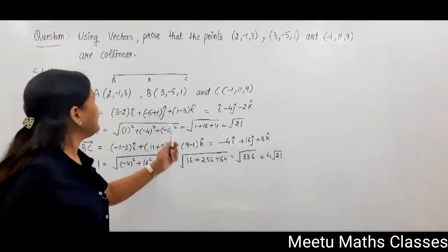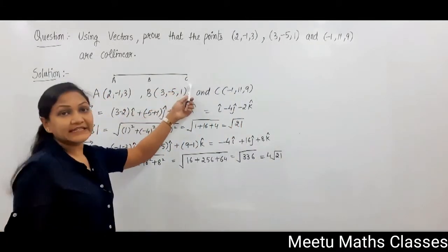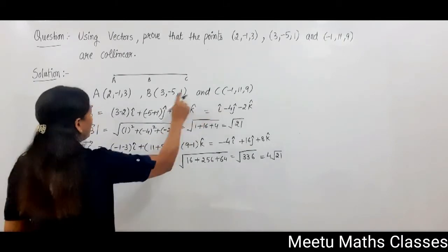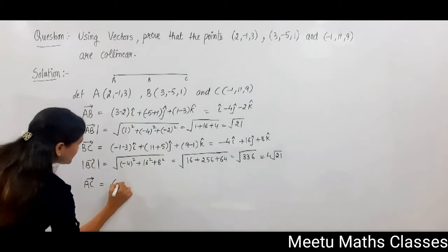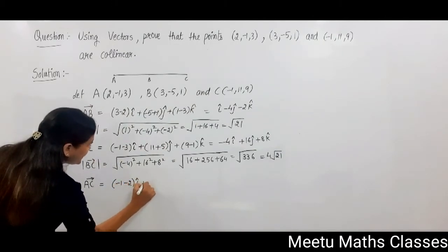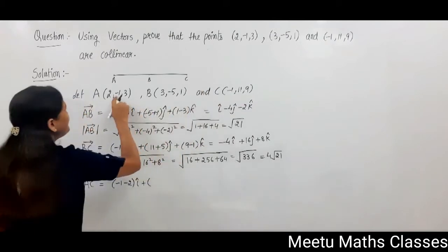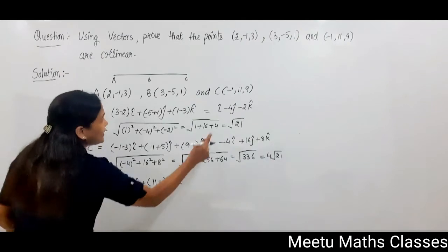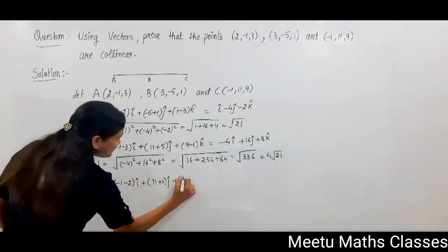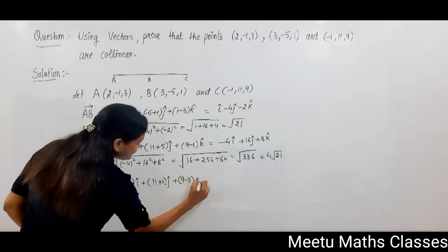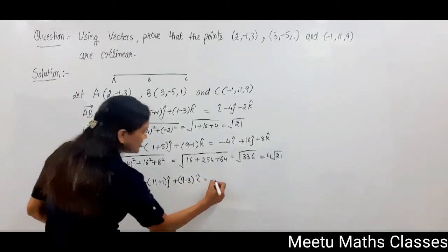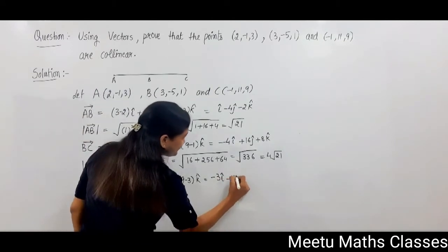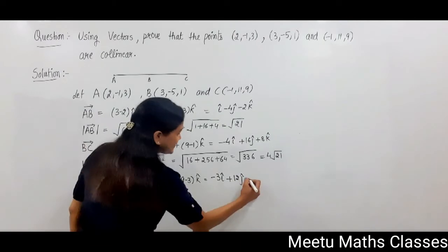Now we are going to find vector AC. Now vector AC equals C minus A, so (-1-2)i plus (11-(-1))j plus (9-3)k, and that equals -3i + 12j + 6k.